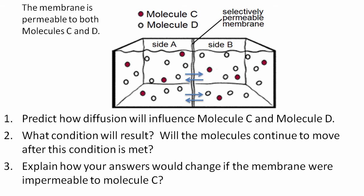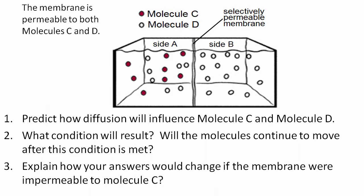If molecule C is impermeable to the membrane, then only molecule D will be allowed to move across and will establish an equilibrium on its own concentration gradient. The result will be an equal concentration of molecule D on both sides, but molecule C will only stay on side A.